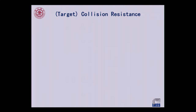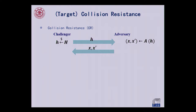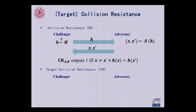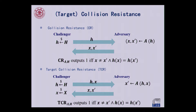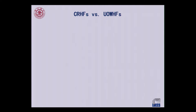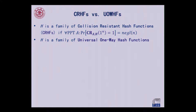The difference between standard collision resistance and target collision resistance is as follows. In the standard sense, a hash function is collision resistant if it is hard to find any collision. But in the target collision resistance case, the adversary has no control over the first point — it is hard to find a collision onto a random point. This is a weaker notion, but it suffices for many applications.